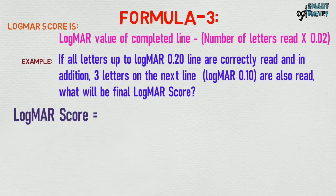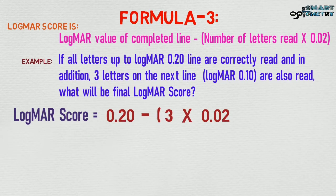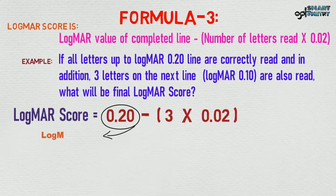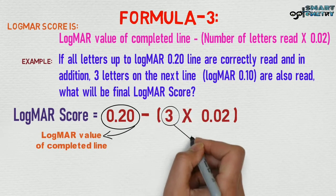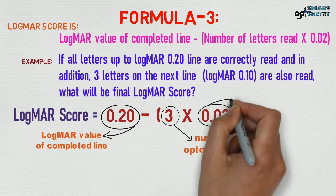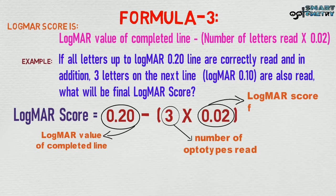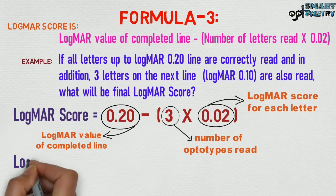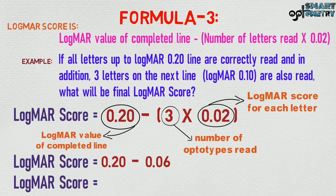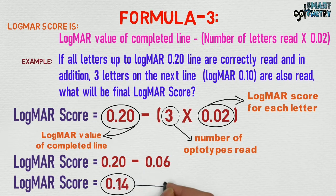logMAR score equals 0.20 minus 3 multiplied by 0.02. Here, 0.20 is the logMAR value of the completed line, 3 is the number of optotypes read, and 0.02 is the logMAR score for each letter. Therefore, logMAR score equals 0.20 minus 0.06, which equals 0.14. This is the final logMAR score.